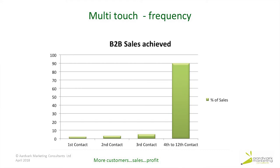If it's a 'not yet,' we need to keep in contact with them. From the graph, you can see there's about a 2% success rate on the first contact, 3% on a second contact, and about 5% on a third. But the sweet spot is between 4 and 12, which is why multi-touch programmes work. You keep going, talking to people, developing your message, building trust, so that when the time is right for the prospect, they will get in touch with you.